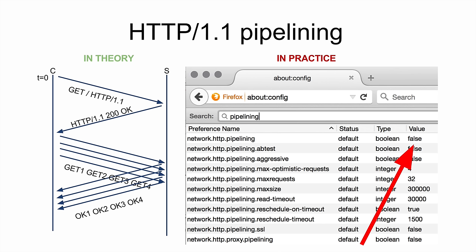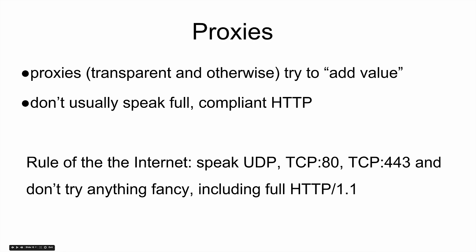HTTP 1.1 does have a feature called pipelining, which clients and servers are basically required to support. In theory, it lets you do your slow TCP setup and slow TLS setup once, and then once you have your connection live, you could send all your requests and get all the responses in order. The problem is it doesn't actually work in practice, because middleware on the internet breaks it all. So in practice, all the browsers have it disabled, because proxies are annoying and they break everything.